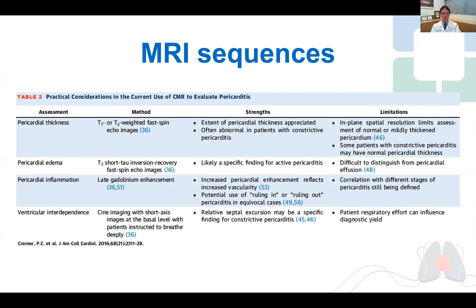However, probably more important is cardiac MRI, which has become a cornerstone in the evaluation of pericardial diseases. In pericarditis, there are four main facets. Firstly, pericardial thickness, best seen on black blood spin echo sequences with good anatomical delineation.